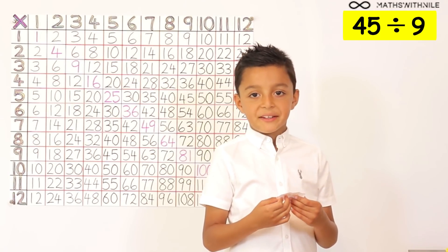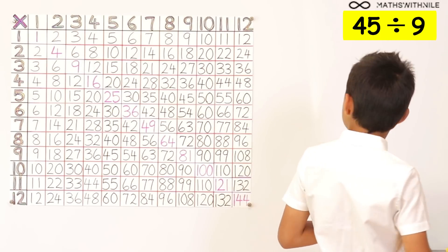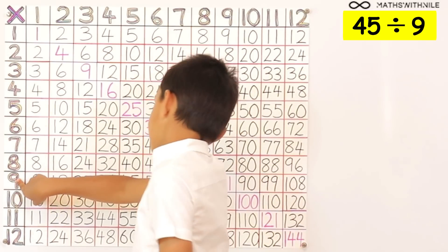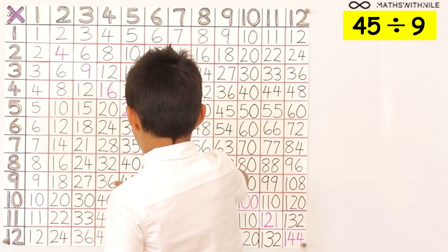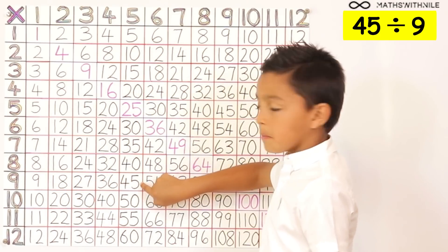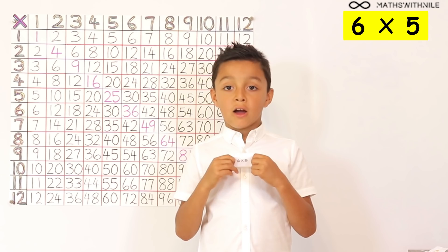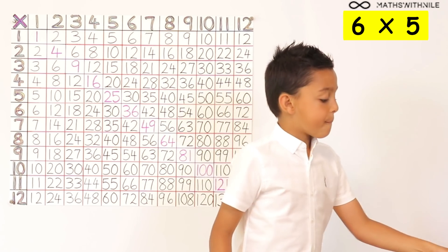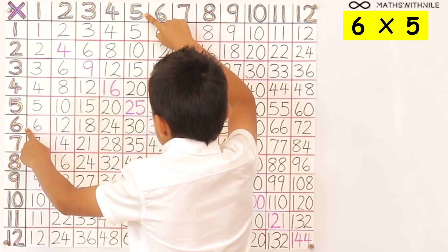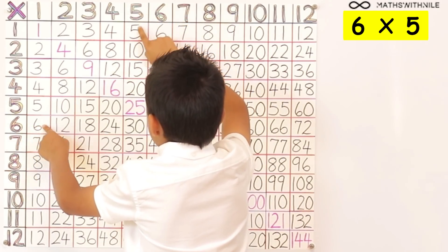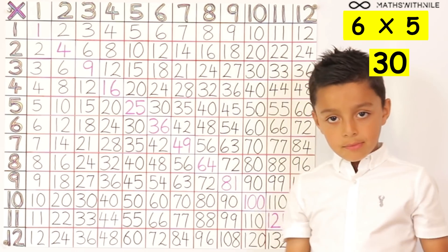45 divided by 9. Where are you starting? At my 9 times table. I'm going to go to 45. 45 is here, and then I go up — equals 5. Next: 6 times 5. Let me get my 5 times table and my 6 times table. 6 times 5 equals 30. Good job.